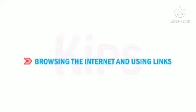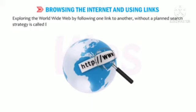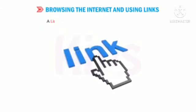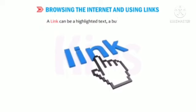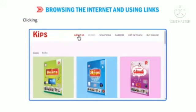Let us learn how to browse the internet and use links. Exploring the World Wide Web by following one link to another without a planned search strategy is called browsing or surfing the internet. A link can be highlighted text, a button or an image. When we move the cursor over a link, the cursor changes to a hand.